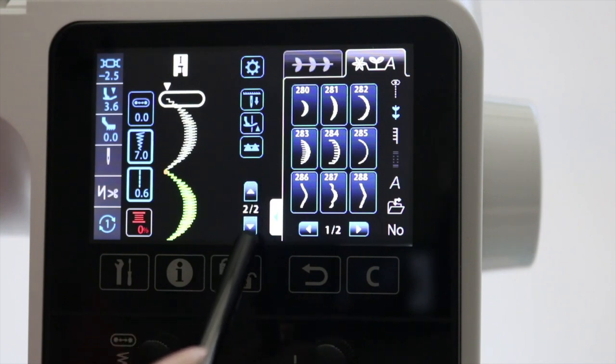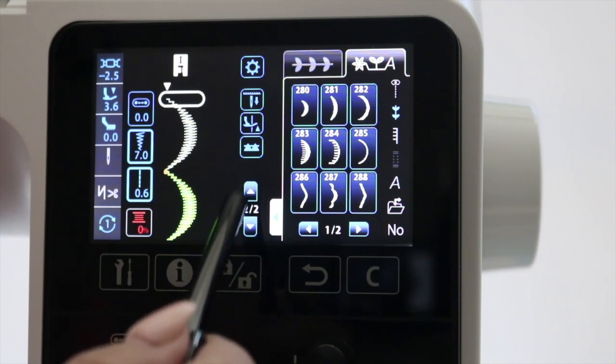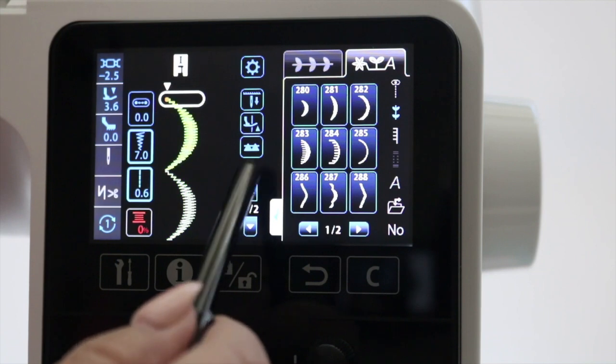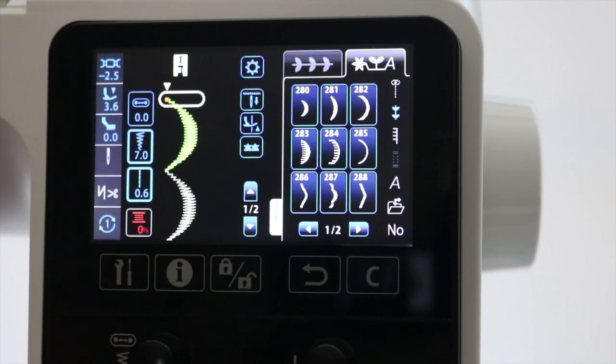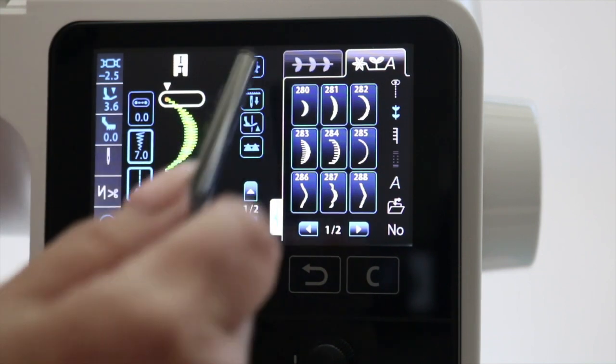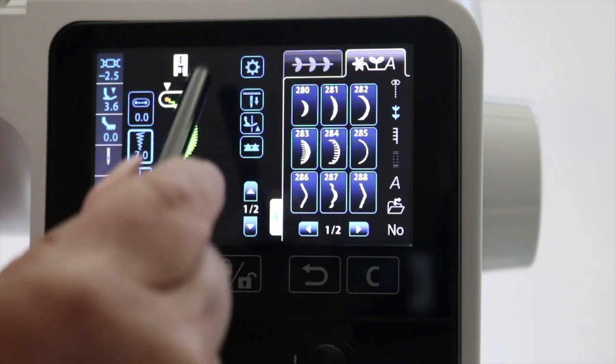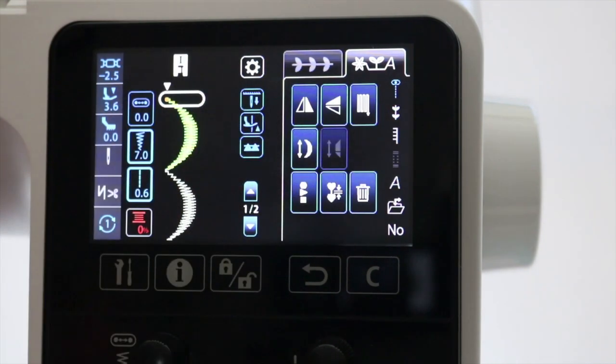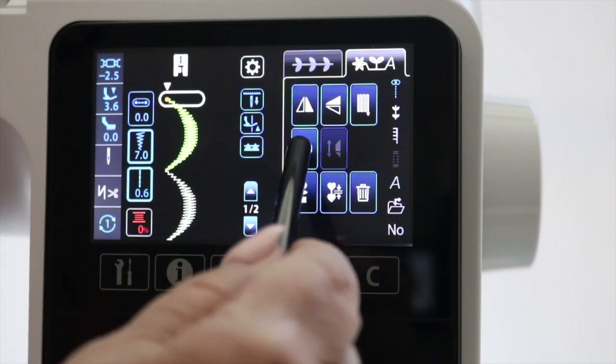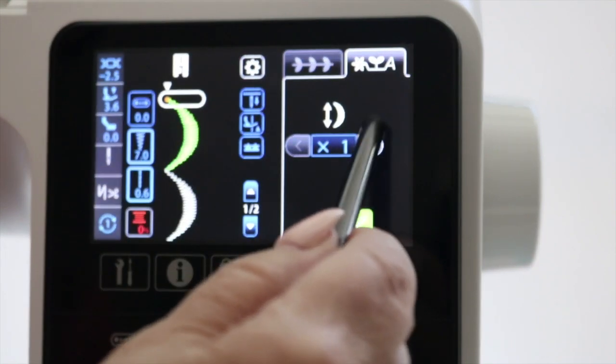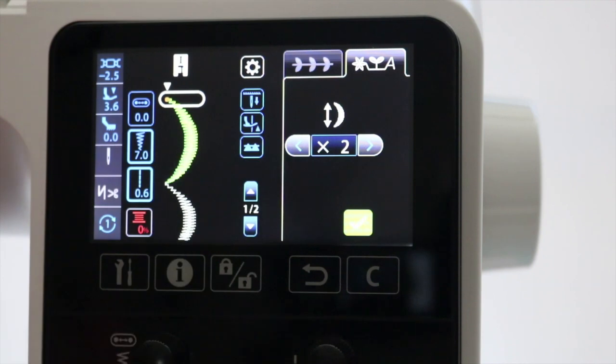I want to work with the first scallop. There is a page up and page down here at the bottom. When I touch page up, you see the first scallop is selected. Now I can go and change that stitch. I'm going back into my settings. I can change the elongation of that one. Maybe I want it to be two times the length.